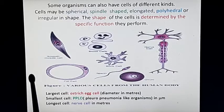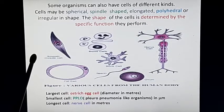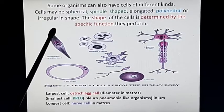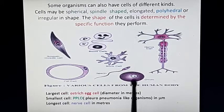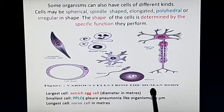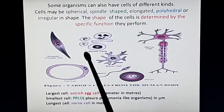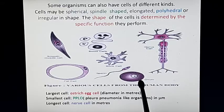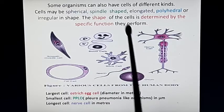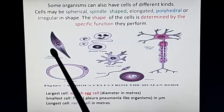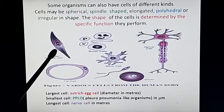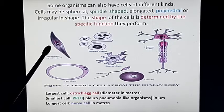This slide shows the variation in cells on the basis of shapes. Some organisms have different shapes in their cells. The cells in the human body vary in their shapes. We can see spherical shaped cells like blood cells (RBCs) and the egg cell (ovum). Spindle shaped cells are narrow at the points — this type of cell is found in muscular tissue.